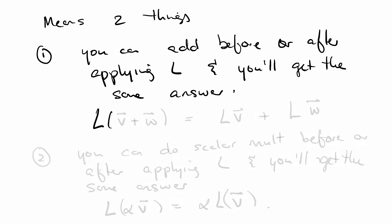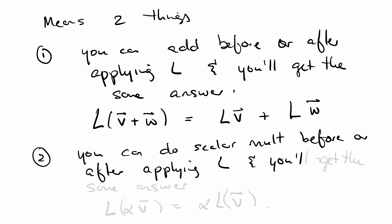For example, L of V plus W is going to be L V plus L W. It also means you can do scalar multiplication before or after applying L and you'll get the same answer. So L of alpha V should be equal to alpha L V all the time.